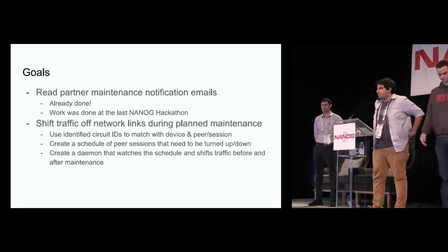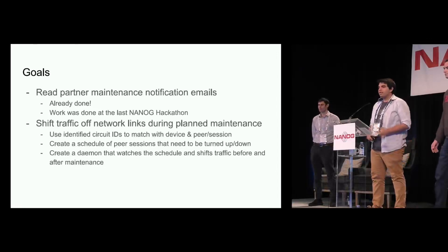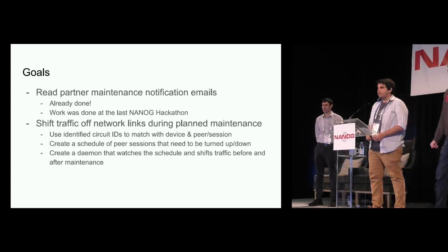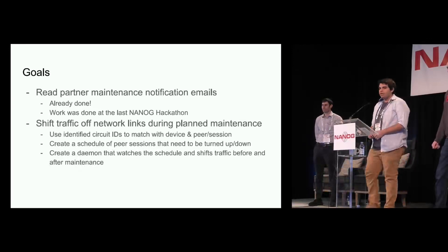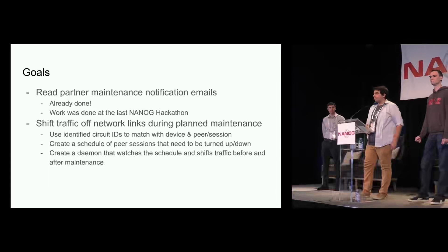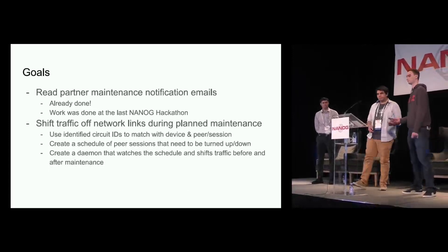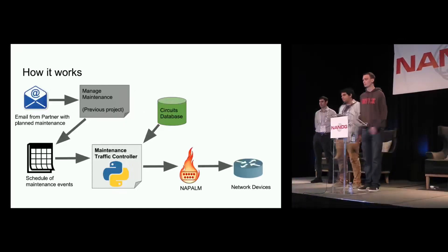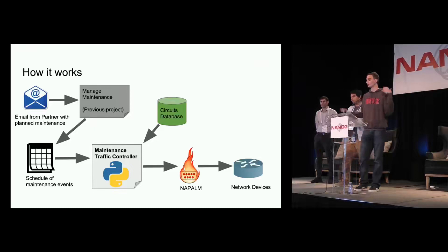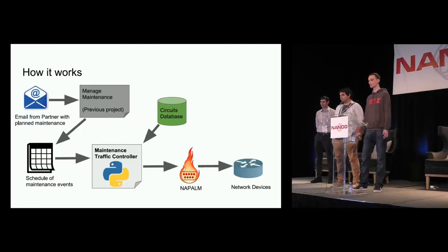As the theme was a traffic controller, this year we implemented traffic shifting off network links during planned maintenance. We used identified circuit IDs to match with the device and the peering session, then created a schedule from the emails of the peering sessions that are going to be turned down — and when to turn them down and back up — and then created a daemon that watches the schedule and shifts traffic before and after the maintenance. The first two pieces are receiving the email from partners and parsing the map, which was what we worked on at the previous hackathon. The continuation focused on the schedule of maintenance events and then the Python process we're calling the maintenance traffic controller.